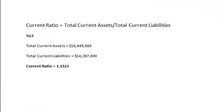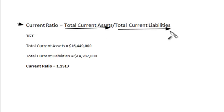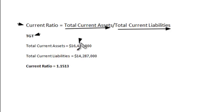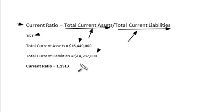Let me show you the formula. Here we have the actual current ratio formula — total current assets simply divided by the total current liabilities — and the answer to that formula will be the current ratio. Looking at Target (TGT), total current assets equals $16.4 billion and total current liabilities equals $14.2 billion. We take 16.4 billion divided by 14.2 billion and we come up with a current ratio of 1.1513.